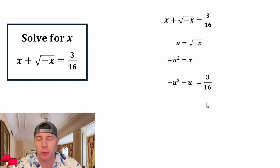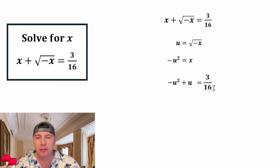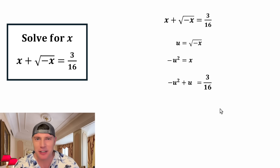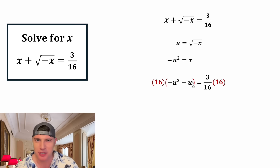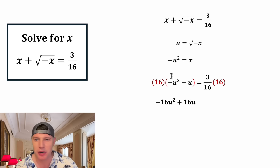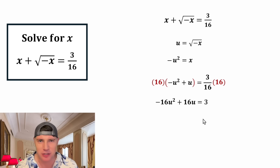Now everything in this equation can be rewritten in terms of u. This x can be rewritten as negative u squared, and the square root of negative x can be rewritten as u. So now we have negative u squared plus u equals 3 sixteenths. I don't really like fractions, so let's get rid of this denominator by multiplying both sides by 16. That gives us negative 16u squared plus 16u equals 3.